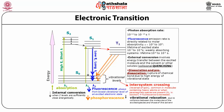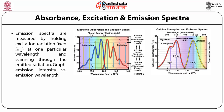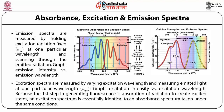Regarding absorbance, excitation, and emission spectra: emission spectra are measured by holding the excitation radiation fixed at one particular wavelength (lambda excitation) and scanning through the emitted radiation. Excitation spectra are measured by varying the excitation wavelength and measuring emitted light at one particular wavelength (lambda em). The graph shows excitation intensity versus excitation wavelength. Because the first step in generating fluorescence is absorption of radiation to create an excited state, an excitation spectrum is essentially identical to an absorbance spectrum taken under the same conditions.